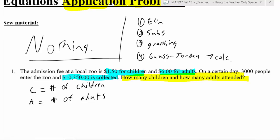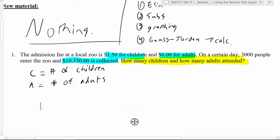And we see that there's a total of $10,350 collected. So our money equation would be $1.50 times C. So $1.50 per child times the number of children plus the adults is $6 times the number of adults. And those together should add up to make $10,350.